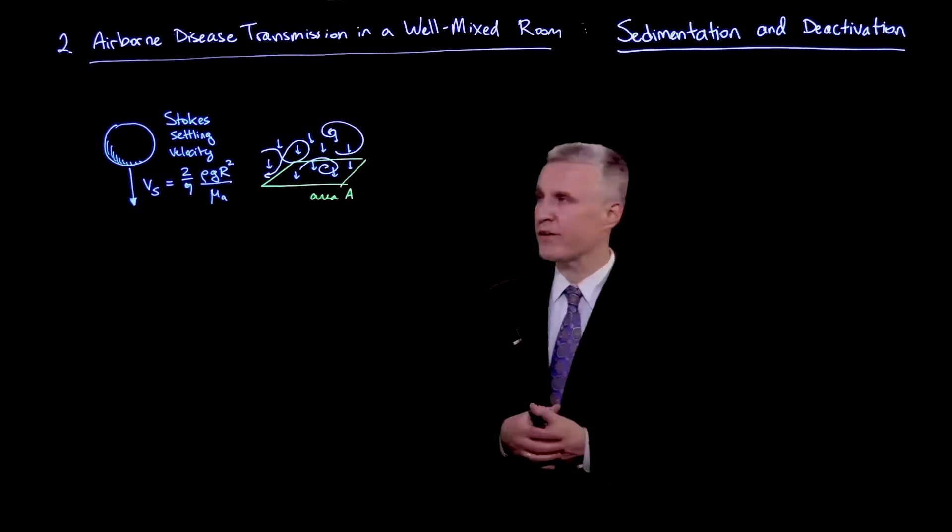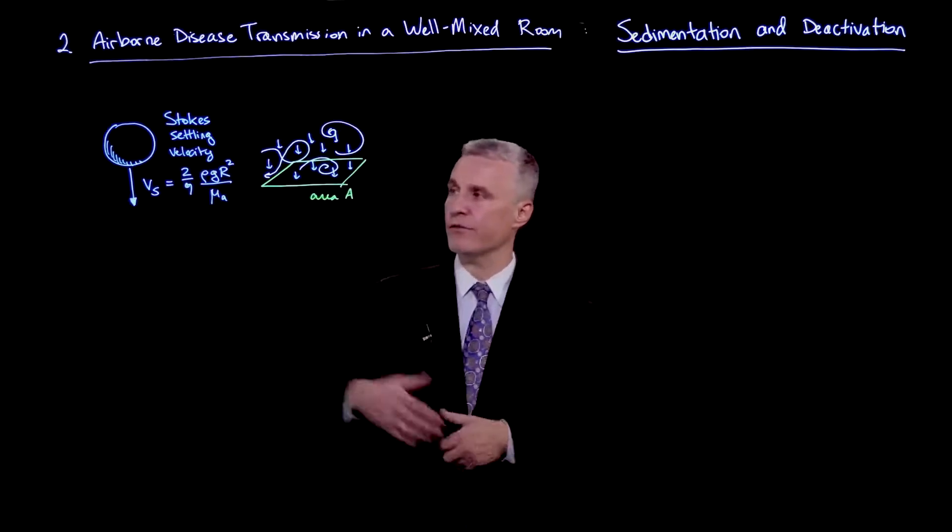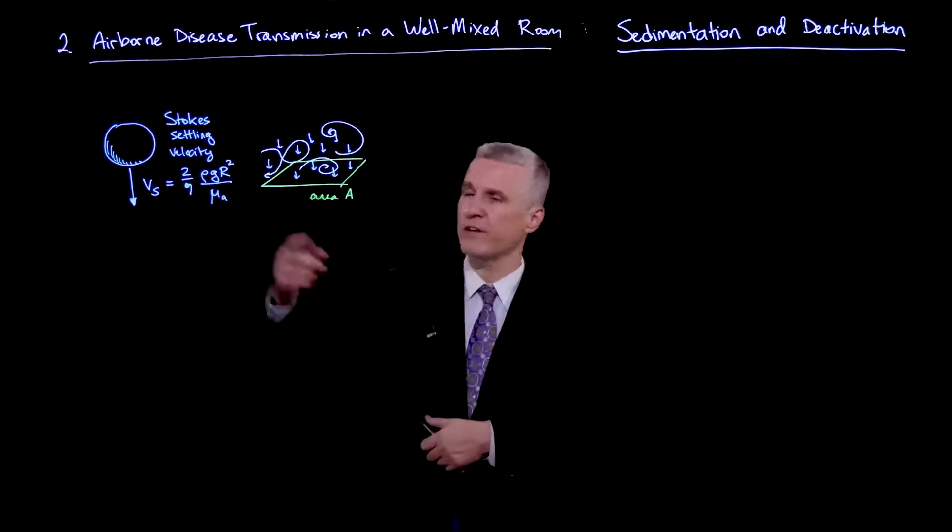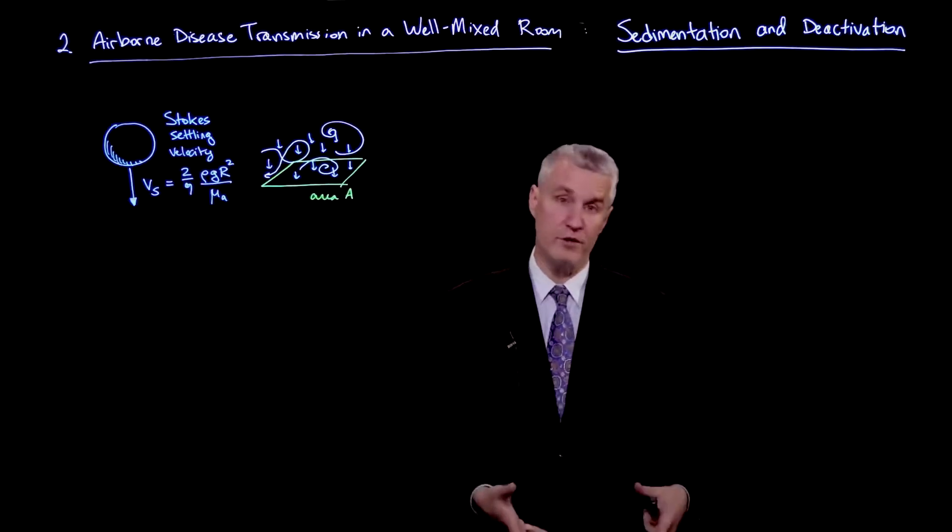So the primary way that can occur is simply by settling of the droplets. We've already talked about the Stokes settling speed, which scales as the radius of the droplets squared. So basically, larger droplets fall fairly quickly.